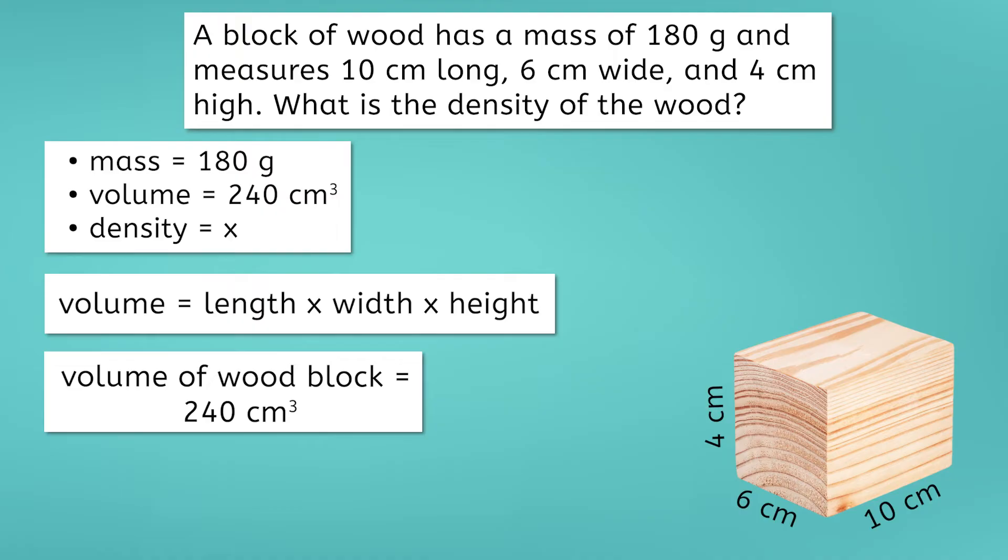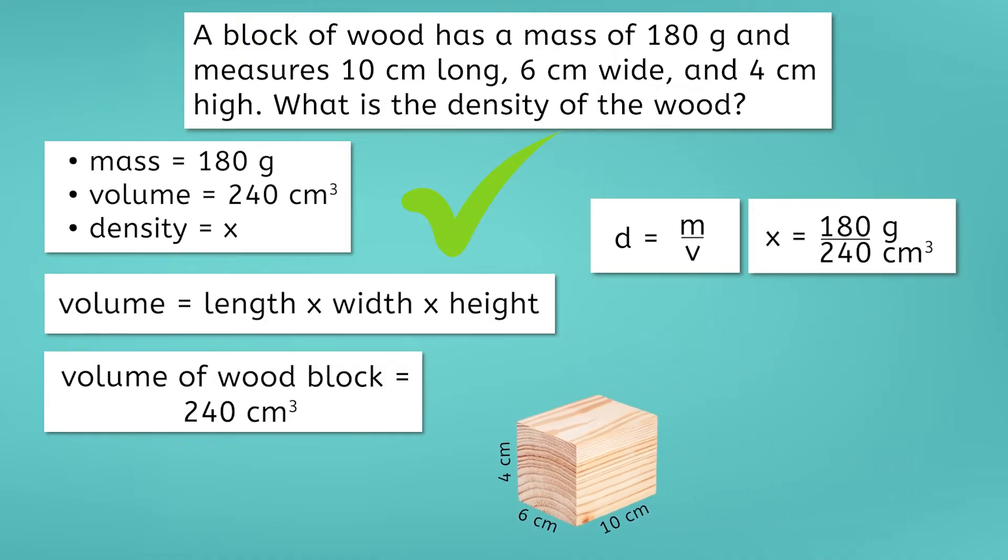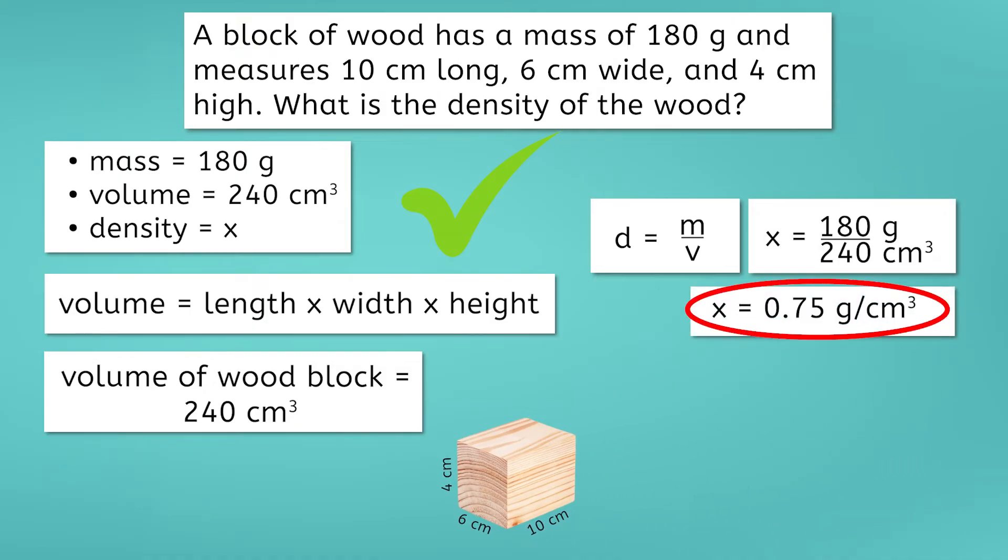Let's check our units. Are they grams for mass and centimeters cubed for the wood? Yep! Great! The last two steps are to plug the values into the formula and solve. The density of the wood is equal to 180 grams divided by 240 centimeters cubed. Using a calculator, we can find that density equals 0.75 grams per centimeters cubed. So, the density of the wood is equal to 0.75 grams per cubic centimeter.